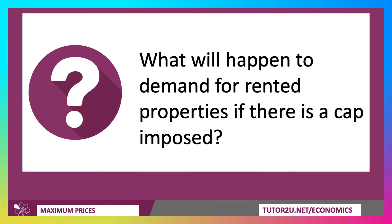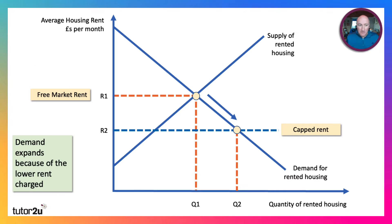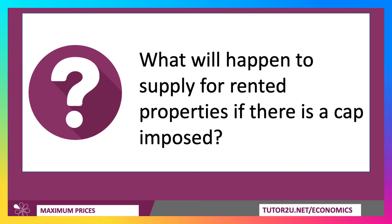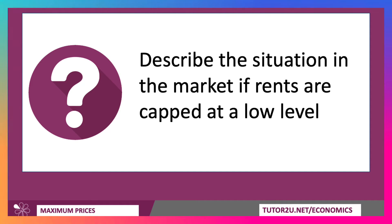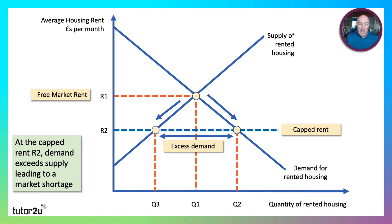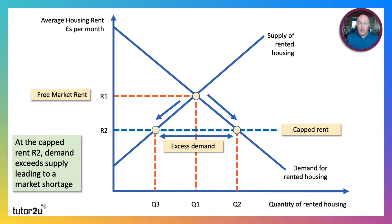What will happen to demand for rented property if a cap is imposed? Well, demand is going to expand because if the rent is lower, more people will be willing and able to afford rented property. But if a rent cap is imposed, supply may well contract — the lower rent R2 reduces the return to landlords. So after the capped rent R2 at the maximum price, demand Q2 is greater than supply, leading to a market shortage. There is a disequilibrium — an excess demand.